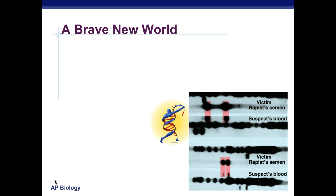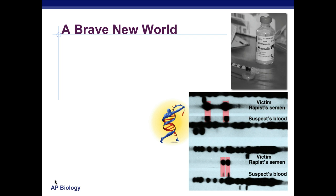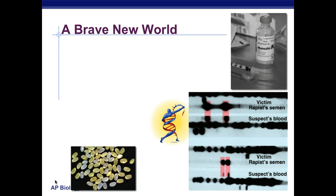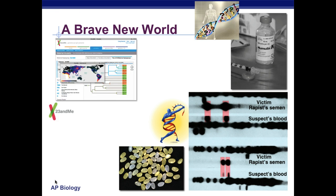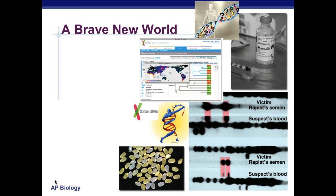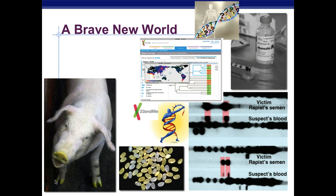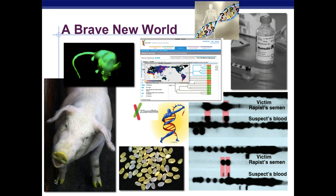We can look at forensics, the ability of bacteria to create and make human insulin, the addition of vitamin A into rice, also being able to send in your DNA to find out where your ancestors originated from, as well as adding the glow gene in two parts of the pig and the rat. These are just some examples of creating and manipulating DNA in different ways.